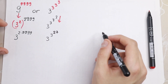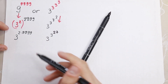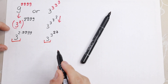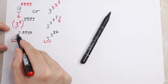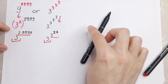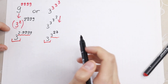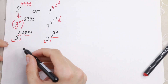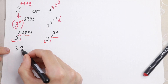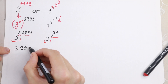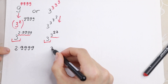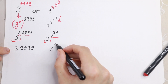As you can see, we now have the same base on both sides — base 3 on the left and base 3 on the right. So we only need to compare the exponents. The left exponent is 2 times 9^(9^9) and the right exponent is 3^27.